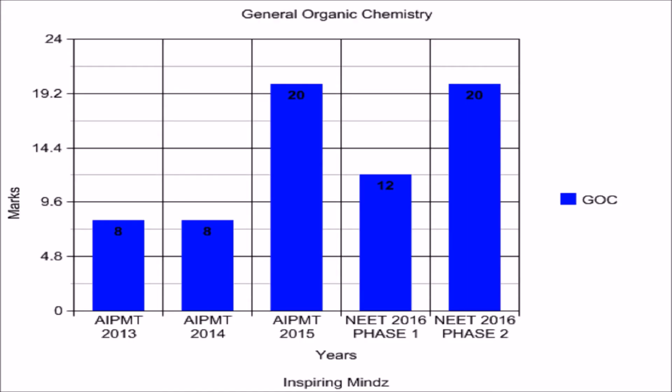General Organic Chemistry is the most important chapter according to the weightage and marks distribution. If somebody wants to score more marks in less time, they should focus on this chapter. In AIPMT 2013 and 2014, 8 marks of questions were asked each year. In AIPMT 2015 and NEET 2016 phase 2, the weightage was 20 marks, while in NEET 2016 phase 1 the weightage was 12 marks.